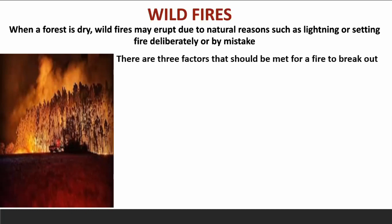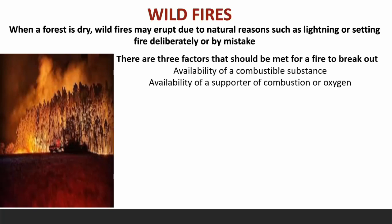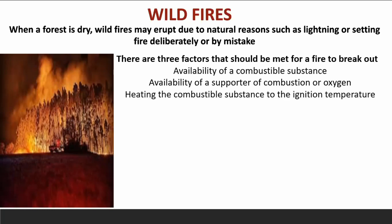There are three factors that must be met for a fire to break out: availability of a combustible substance — substances that are easily burnt; availability of oxygen to support combustion, as without oxygen combustion cannot take place; and heating the combustible substance to its ignition temperature. When a substance is heated to the temperature at which it starts burning, that is known as the ignition temperature. Different substances have different ignition temperatures.